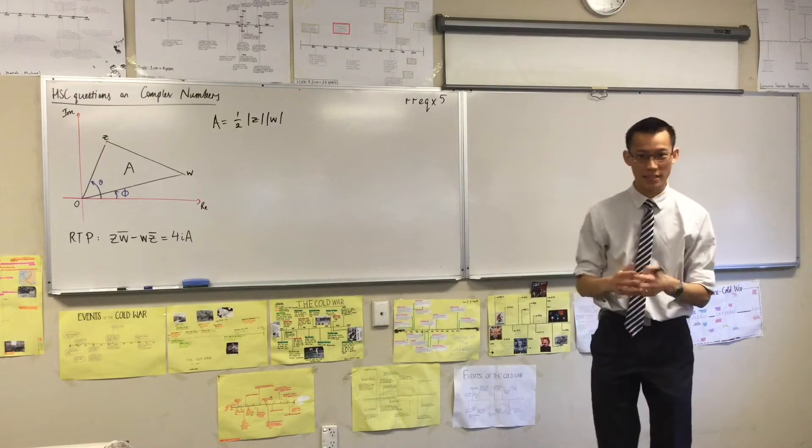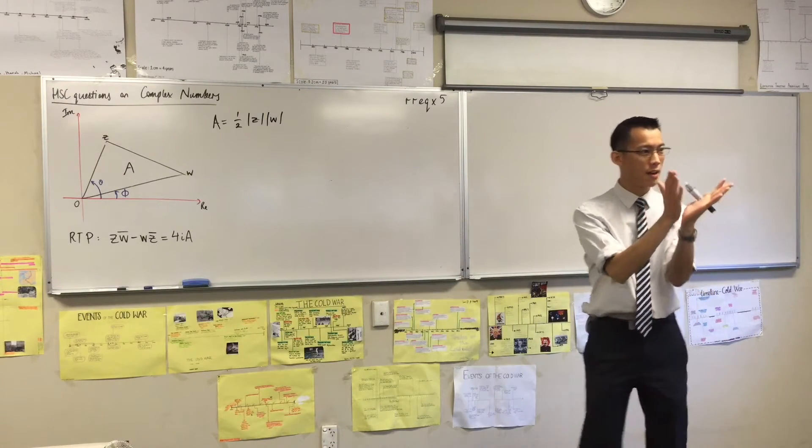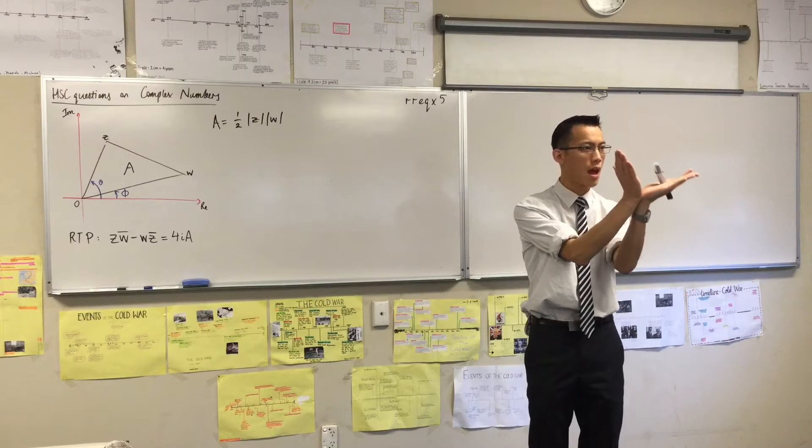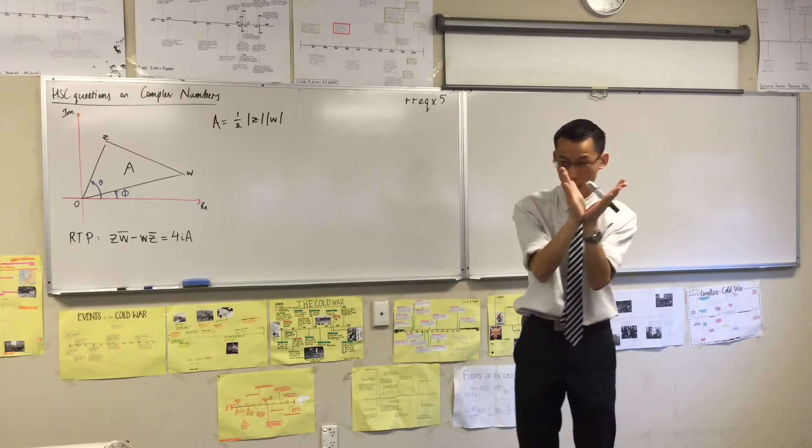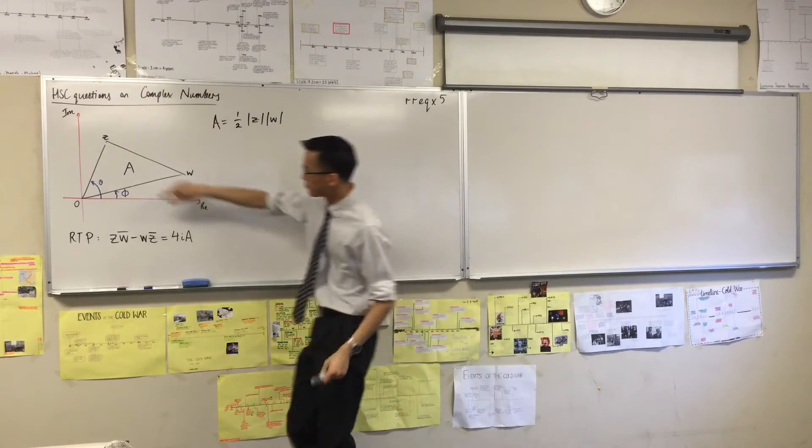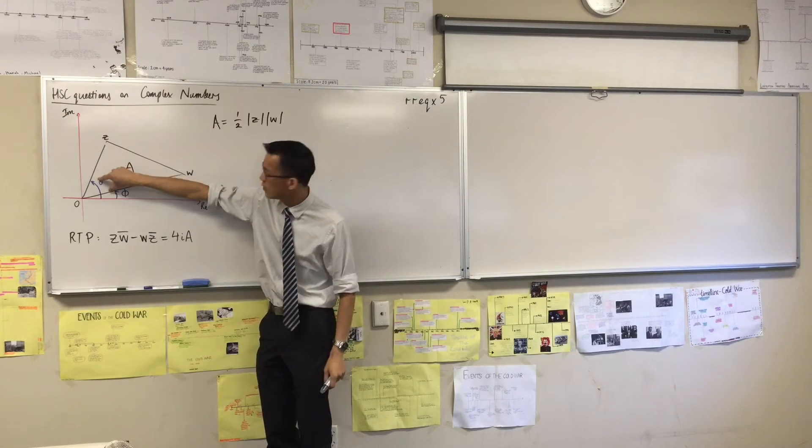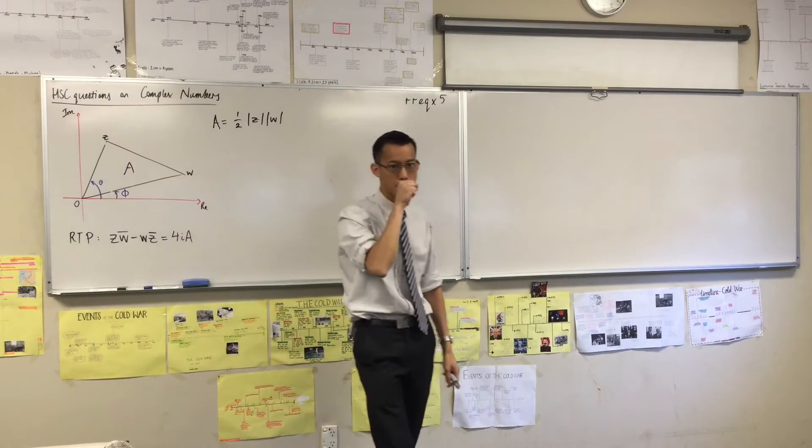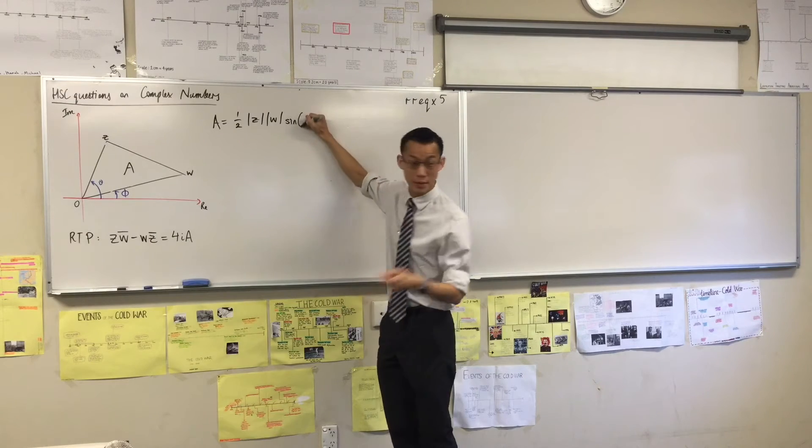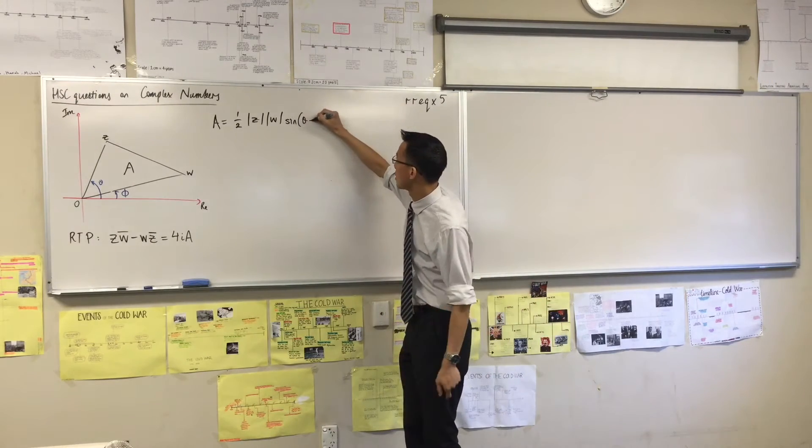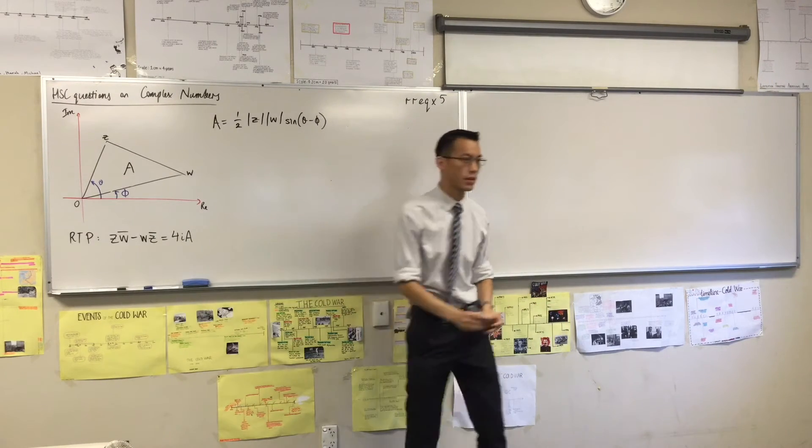Now, the last piece is sine C. The important thing about sine C is that when you've got the two sides, the angle you're interested in is the included angle, the one in between. So in this case, it's this angle in here. What's the value of this angle? It's the difference between theta and phi. So I've got sine and then the particular value I'm after is theta minus phi.